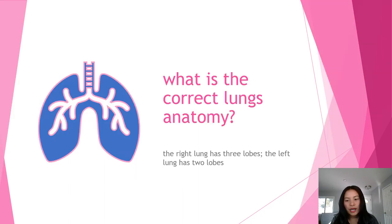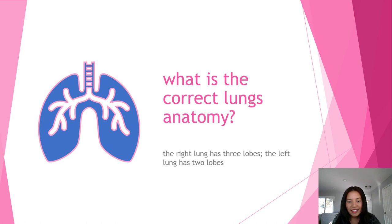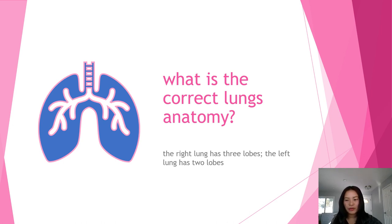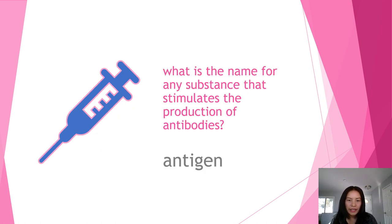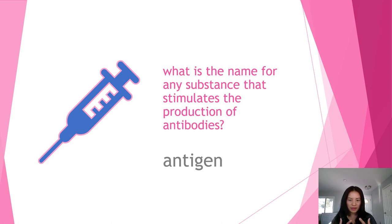Regarding lung anatomy: the right lung has three lobes and the left lung has two lobes — don't confuse them. An antigen is the substance that stimulates the production of antibodies.